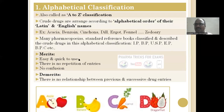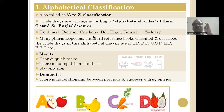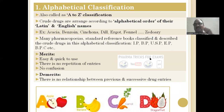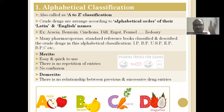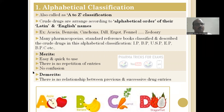Total seven types. First we will see everything in a sweet and short manner with examples. Alphabetical classification is also called the A to Z classification. Drugs are arranged based on the alphabetical order of their Latin and English names — Acacia, Benzoin, Cinchona, Dill, Ergot, Fennel. Many pharmacopoeias such as the Indian Pharmacopoeia, British Pharmacopoeia, and USP also use this classification.